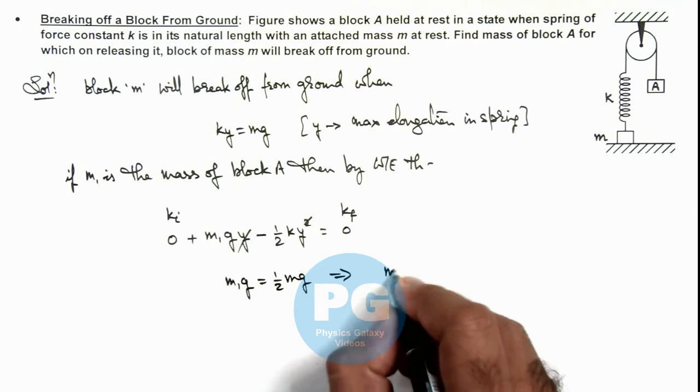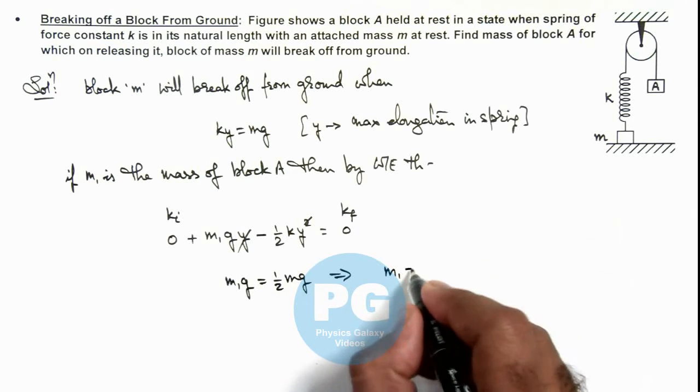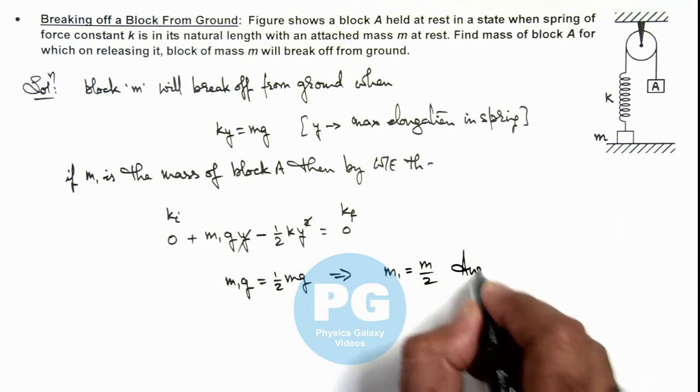This implies the value of m1, the mass of block A, we are getting is m by 2. That will be the result of this problem.